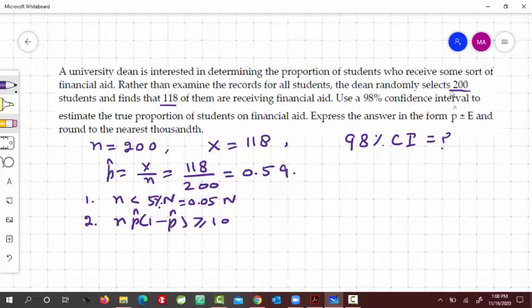So with this number of students, 200 is definitely, right, so n is equal to 200, so 200 is definitely less than 5% of, which is 0.05 times 5,000 students. So with this number of students, then this condition is true, right?